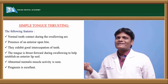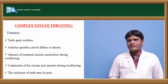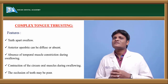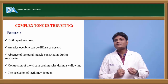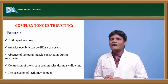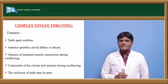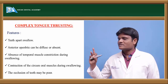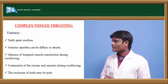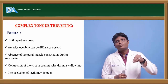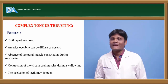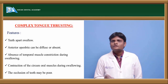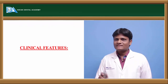In complex tongue thrusting, it is called a teeth-apart swallow — there is no contact between teeth during swallowing. Anterior open bite can be diffuse or absent; there is absence of temporalis muscle contraction, contraction of circumoral muscles, poor intercuspidation of posterior teeth. Complex tongue thrusting is very difficult to treat.